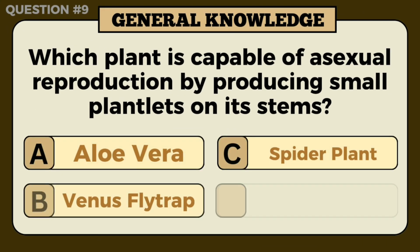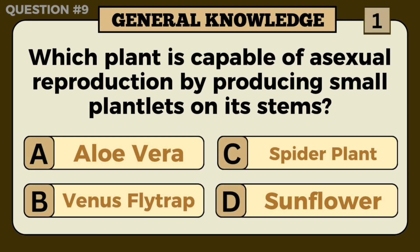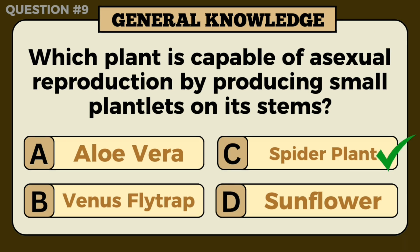Which plant is capable of asexual reproduction by producing small plantlets on its stems? Answer: Spider plant.